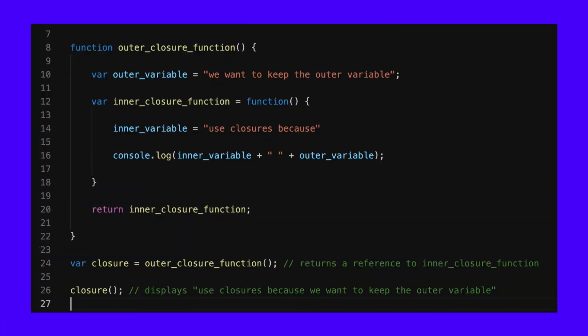Consider the following example code. To understand how this closure works, step through the code line by line. First, you define the outer function and then a variable associated with it. Next, you define the inner function — note that you haven't called it, only defined it. Then there is a statement that returns the inner function itself, not the result of the inner function. So when you define the closure as outer closure function, it returns a reference to the inner closure function. Even though the outer function has completed, the outer variable is still retained in that reference.